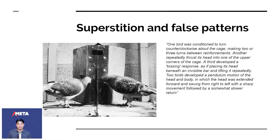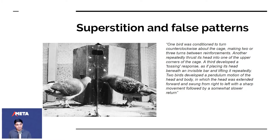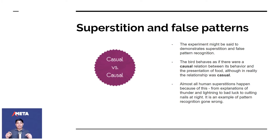This is known as superstition. Your parents probably told you a lot of superstitious beliefs when you were younger — things they had misattributed. Those are examples of false pattern recognitions. The experiment demonstrates superstition and false pattern recognition: the bird behaves as if there were a causal relationship between its behavior and the presentation of food, although in reality the relationship was casual. Causal means something caused another thing; casual means two things happened at the same time but weren't related. Almost all human superstitions happen because of this — from thunder and lightning explanations to bad luck to cutting nails at night.